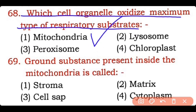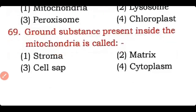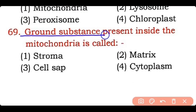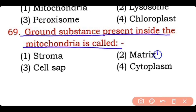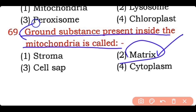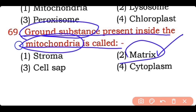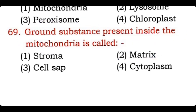Question 68: Which cell organelle oxidizes the maximum types of respiratory substrates — mitochondria, lysosome, peroxisome, or chloroplasts? Correct answer is option one — mitochondria can oxidize many respiratory substrates including proteins, lipids, and carbohydrates. Question 69: The ground substance present inside the mitochondria is called — stroma, matrix, cell sap, or cytoplasm? Correct answer is option two — matrix is the ground substance of the mitochondria.